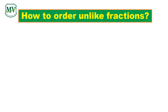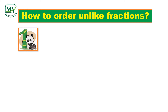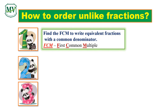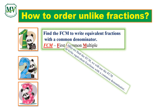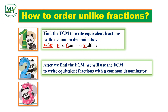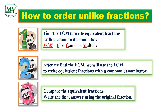How do we order unlike fractions? We have three rules. First, we need to find the LCM to write equivalent fractions with a common denominator. Next, after we find the LCM, we use it to write equivalent fractions with a common denominator. And last, compare the equivalent fractions and write the final answer using the original fractions.